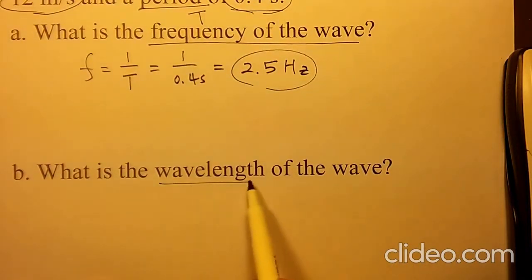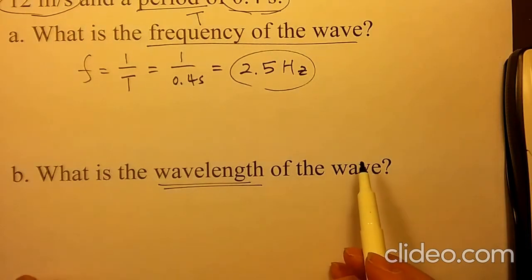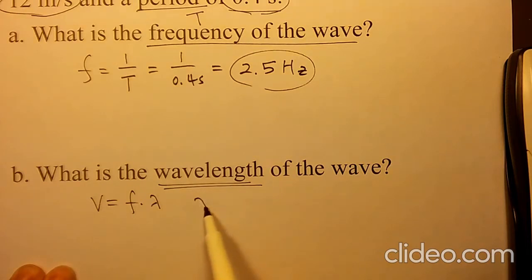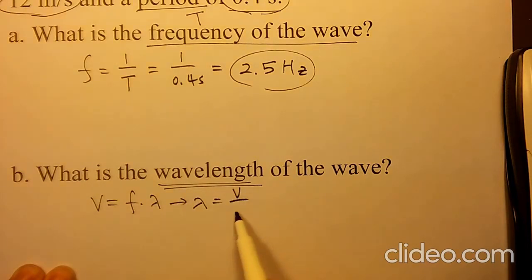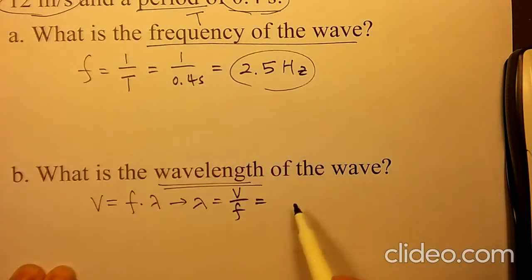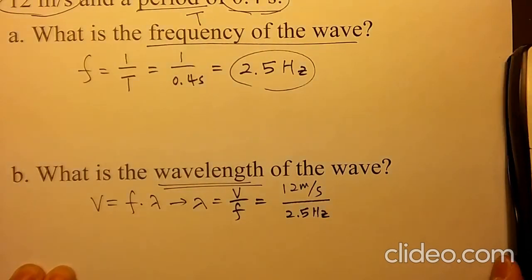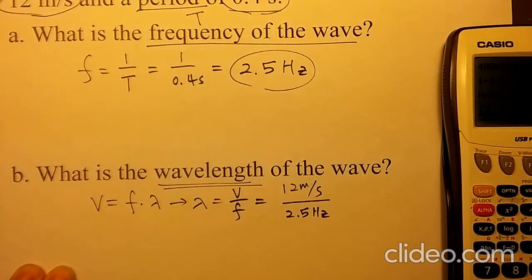What is the wavelength of the wave? V equals F times lambda, then your lambda becomes V over F. V is 12 meters per second and your F is 2.5 hertz, giving you 12 divided by 2.5, which is 4.8 meters as your wavelength.